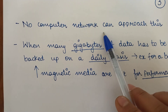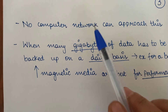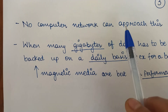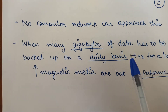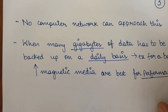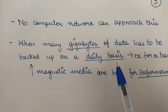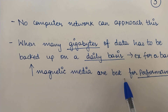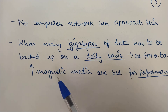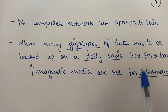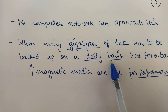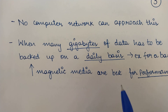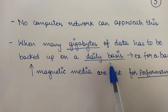Although network speeds are increasing, the storage capacity of magnetic media is also increasing. When many gigabytes have to be backed up on a daily basis, the most effective way is using magnetic media. For example, in a bank where large amounts of banking data must be stored and backed up — so that in case of any natural calamity such as floods that backup can be used — magnetic media companies offer the best performance.